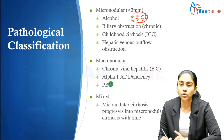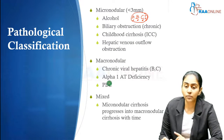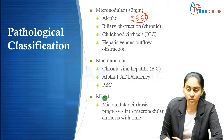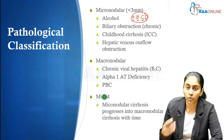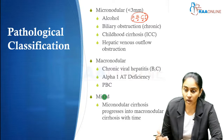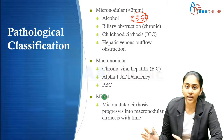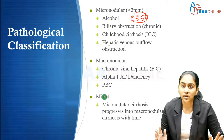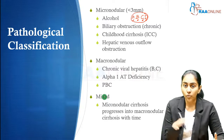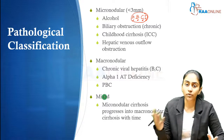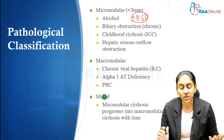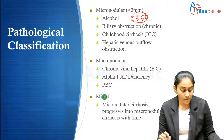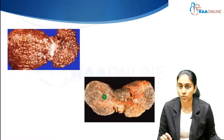It is also good to remember that most causes of micronodular cirrhosis, as the disease becomes more advanced, will eventually also show macronodular changes. Therefore, when we look at the liver, there are going to be both micronodules and macronodules — and this picture is referred to as mixed cirrhosis.